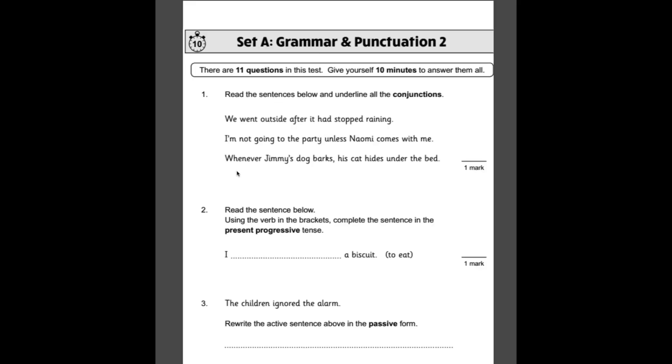Number one, read the sentences below and underline all the conjunctions. What you should know is a conjunction joins two clauses together. So as you can see in the first example, we went outside after it had stopped raining. The two separate clauses in that sentence would be we went outside, that makes sense by itself as the main clause, and it had stopped raining would be the other. Now we join them together using the first conjunction, which is after. That joins these two clauses together.